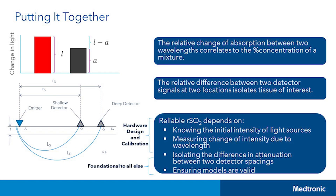Putting this all together, we have some key takeaways. First, the relative change of absorption between two wavelengths correlates to the percent concentration of a mixture. Next, the relative difference between two detector signals at two locations isolates a tissue of interest. Which means that reliable regional oxygen saturation measurements depend on knowing the initial intensity of light sources, knowing and measuring change of intensity due to wavelengths, isolating the difference in attenuation between two detector spacings, and ensuring the models are valid. If we can't confirm we've isolated the tissue of interest, then all other measurements, no matter how high quality and clean, don't tell us what we want to know. Next, we'll step through how INVOS has ensured that the tissue of interest is isolated through proper sensor design.